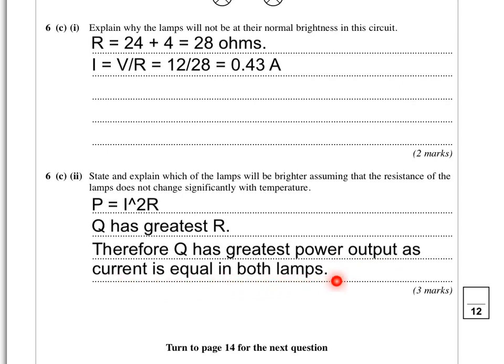Q is the brightest. So 12 mark question there, quite a lot to it. But if you just keep your circuit rules in your head, lamps in series and parallel, not too tricky.